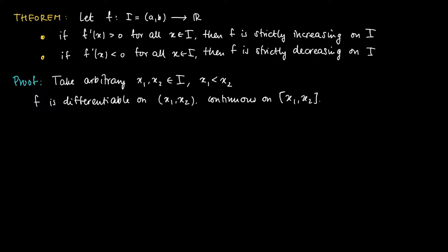And this means that we may apply the mean value theorem on f restricted to the interval [x1, x2]. So the mean value theorem now states that there is a c in the open interval (x1, x2) such that the difference between the function values f(x2) and f(x1) equals the derivative in this value c times x2 minus x1.